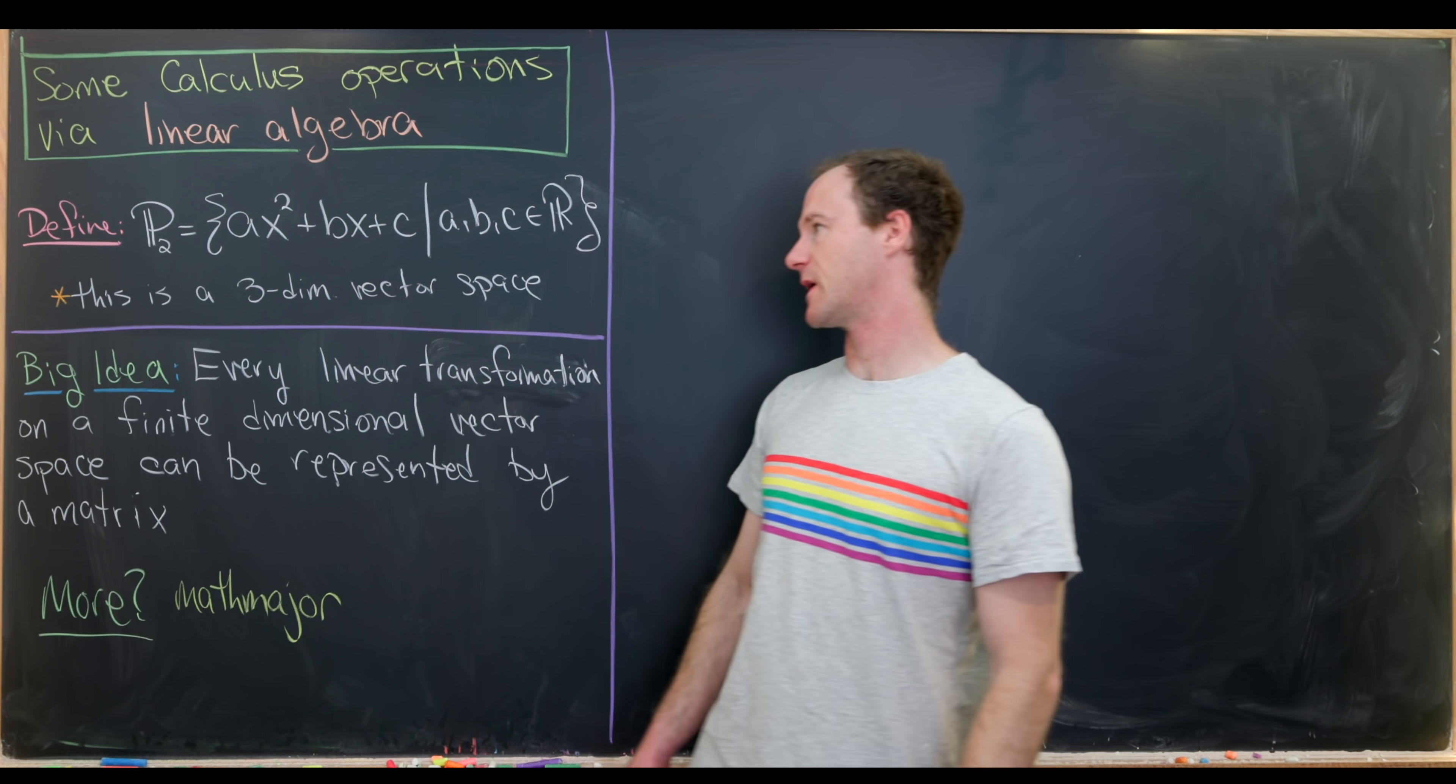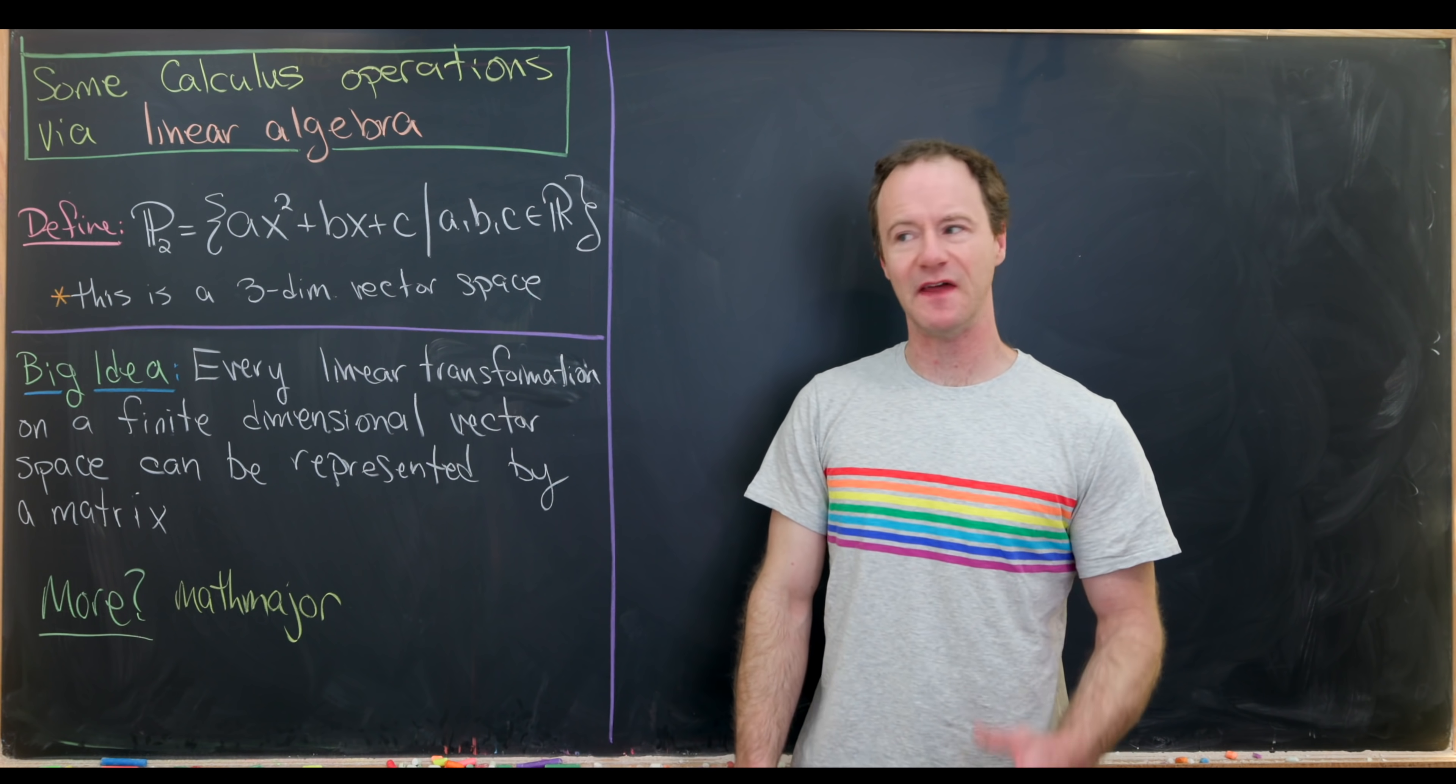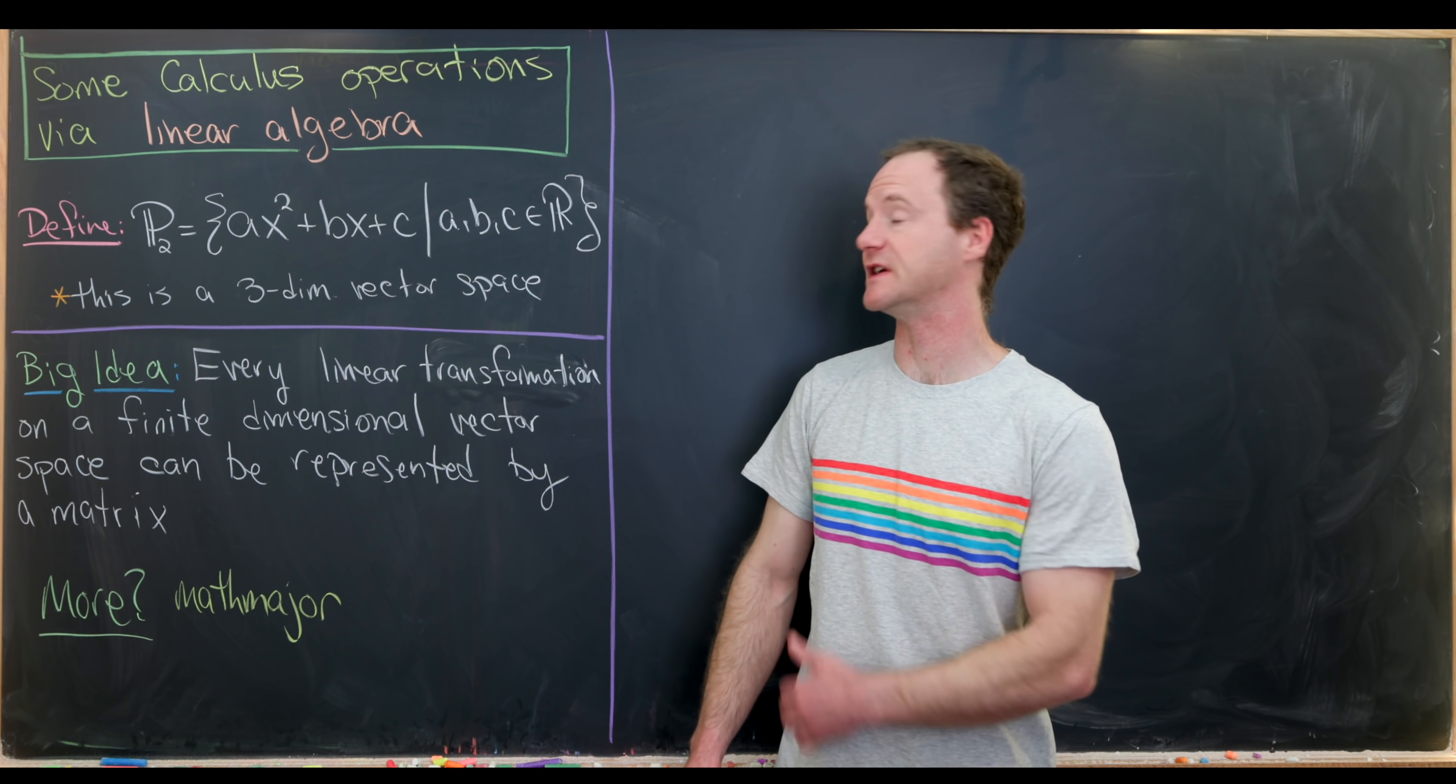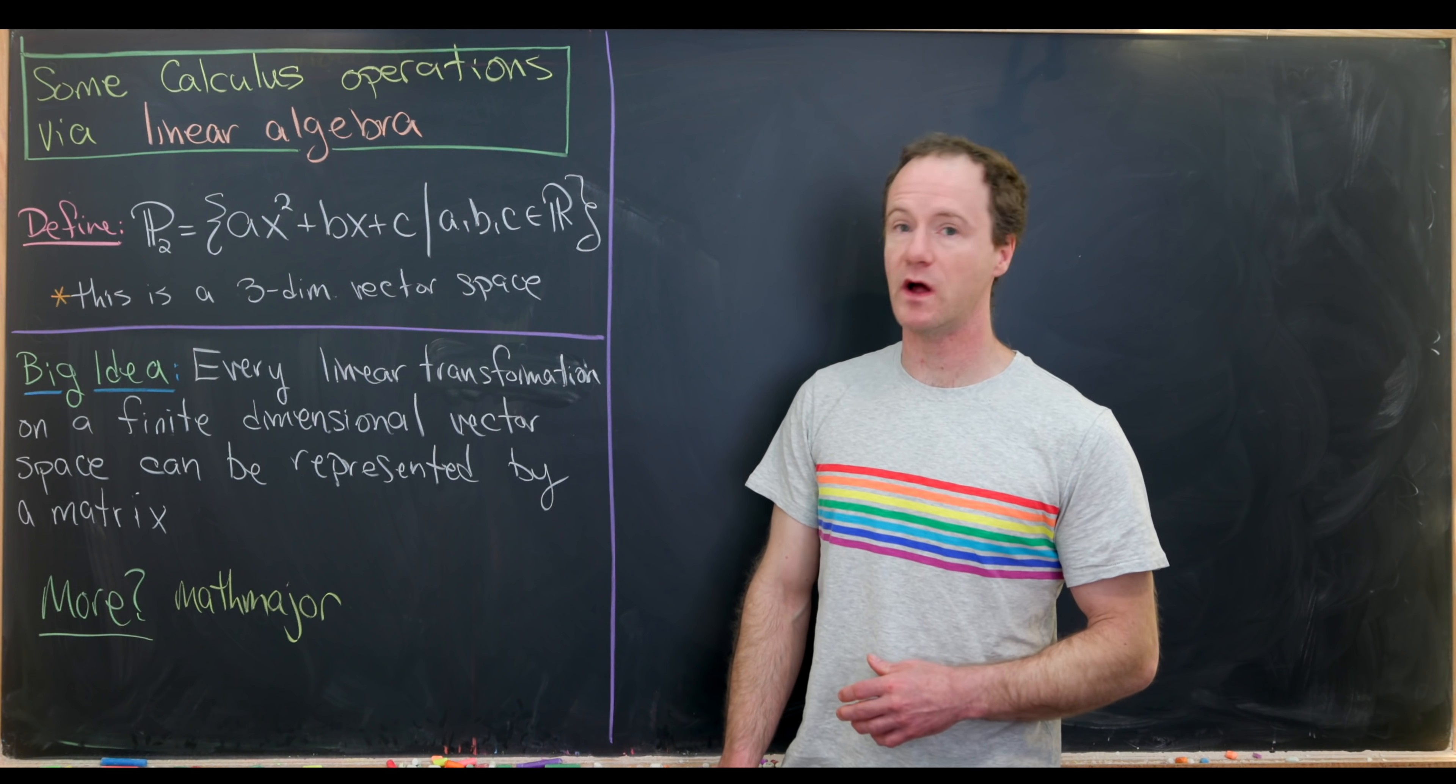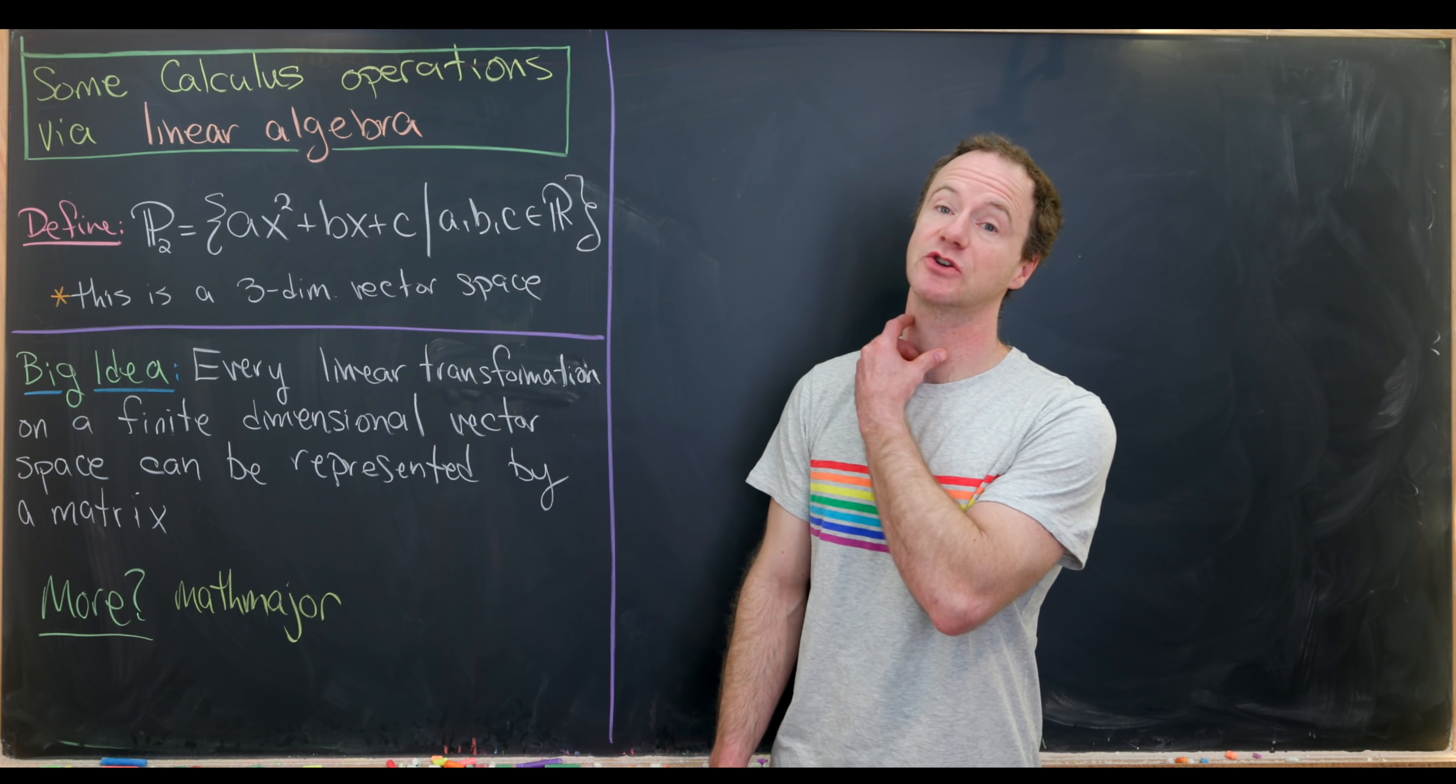Let's start by defining this three-dimensional vector space P2. This is simply the space of all polynomials of degree two or less. So it's polynomials that are degree zero, those would be like constants. Degree one, those would be like linear polynomials. And finally, degree two, those would be quadratics.